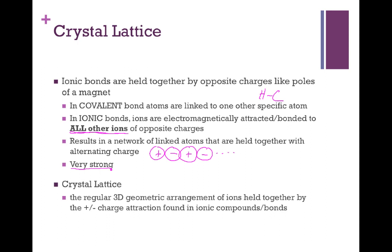This structure has a name to it. It's known as a crystal lattice. And what the crystal lattice is is a regular 3D geometric arrangement of ions that are held together by the positive and negative charge attraction found in the ionic compounds or bonds themselves. So this little line we created here of alternating positive and negative charge is going to grow into something significantly larger when we start talking about it in three dimensions.